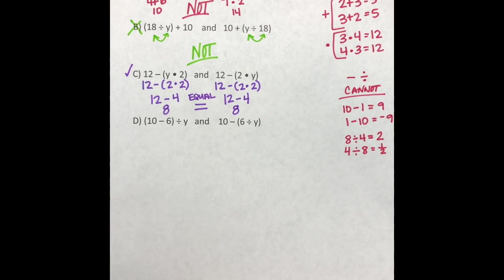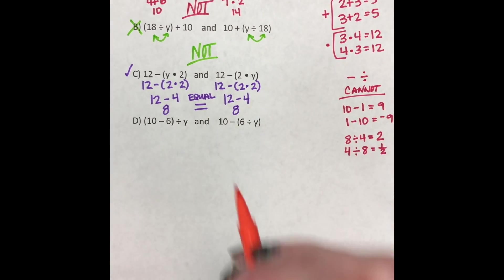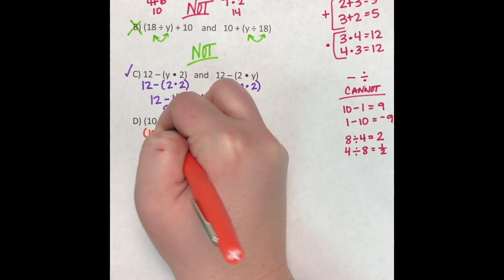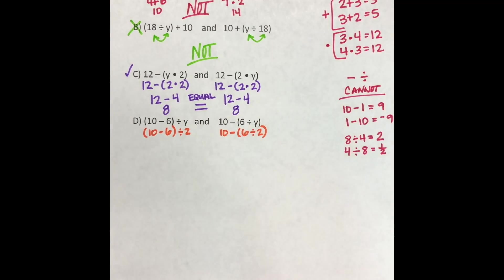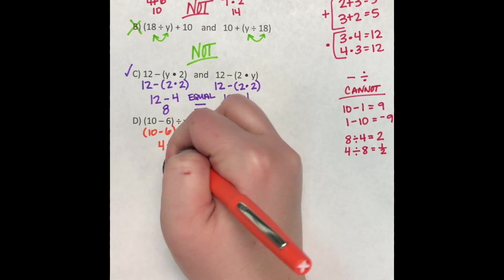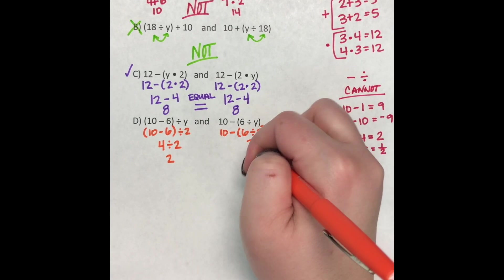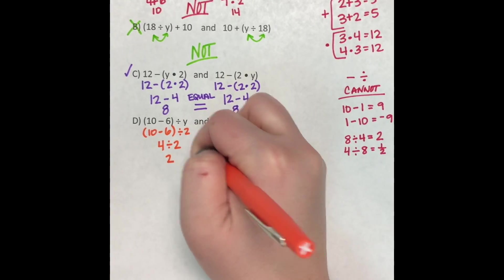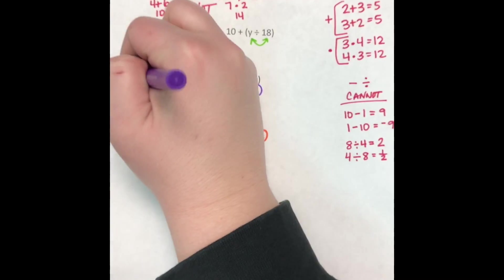So letter choice D says parentheses 10 minus 6 divided by Y, and then 10 minus 6 divided by Y. So in this case, we've just moved the parentheses around. So I can go ahead and plug in and see if that's going to equal the same. So in this case, 10 minus 6 is in parentheses, so we do it first. 10 minus 6 is 4, and then we bring down divided by 2. 4 divided by 2 is going to equal 2. On this side, parentheses first, 6 divided by 2 is 3, and then bring down my 10. 10 minus 3 is 7. So again, these are not equivalent.